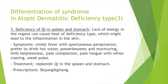Third, lack of energy in the spleen and stomach can cause heat of deficiency type, which may lead to inflammation of the skin. Symptoms are fever with spontaneous perspiration, preference for hot water, powerlessness and murmuring, limb helplessness, pale complexion, pale tongue with white coating, and weak pulse. Treatment is to replenish ki in the spleen and stomach, and bojung ikitang can be prescribed.